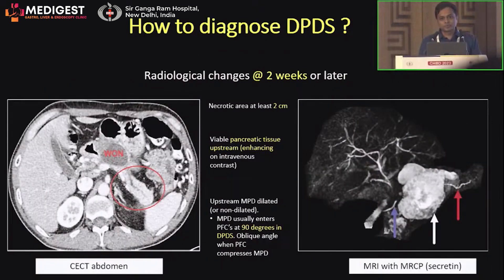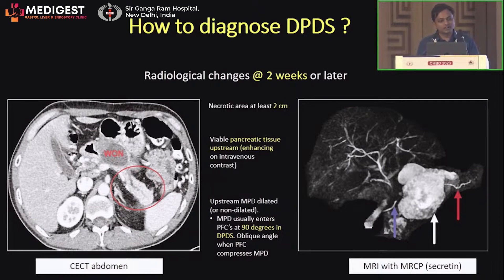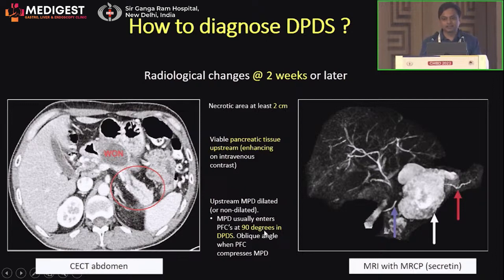In the initial stages of the disease, diagnosis is very difficult because radiological changes take time to appear — usually around the second week or later. Investigations of choice are CT abdomen or secretin MRCP. You would see a necrotic area of at least 2 centimeters, with viable pancreatic tissue upstream that is enhancing on intravenous contrast. A dilated main pancreatic duct upstream may also be observed.